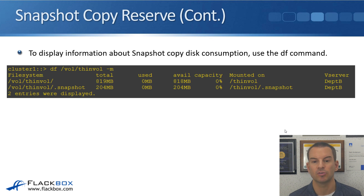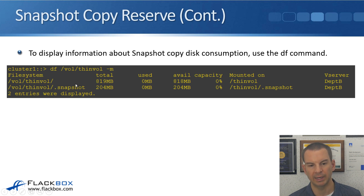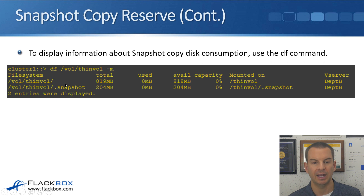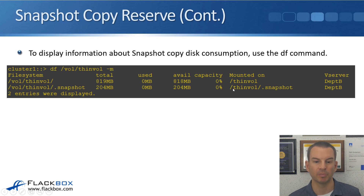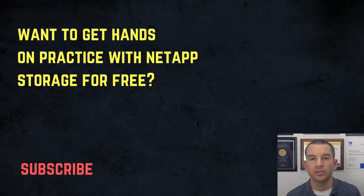To display information about snapshot copy disk consumption you can use the df command. For example: df /vol/thin_vol -m. The output shows /vol/thin_vol as the active file space and /vol/thin_vol/.snapshot as the snapshot copy reserve space. From this output I can see that I created a 1GB volume called thin_vol and the snapshot reserve is currently at 20%. The available size and total size are the same right now because there's no data yet, but as data is added, the available will change — so this is how to monitor snapshot space usage and available space in both the reserve and the active file system.